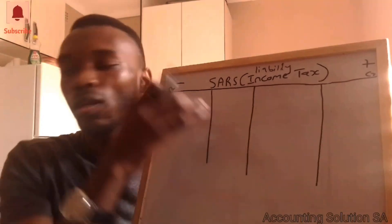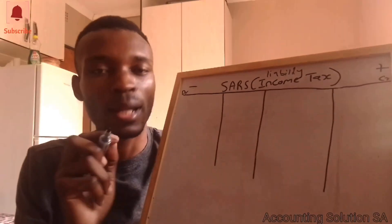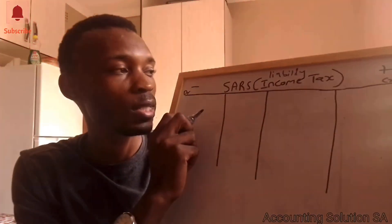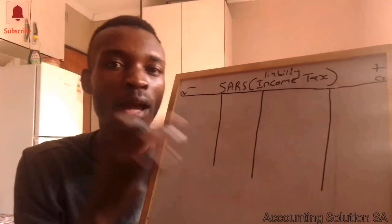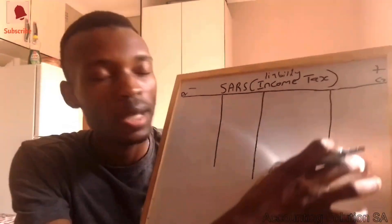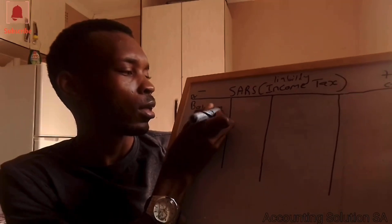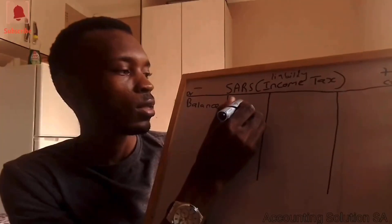Going back to the question: they said the debit balance of SARS income tax on 1 July 2017 is 10,800. Since it's stated as a debit balance, we write it on the debit side. If they had said it was a credit balance, we would write it on the credit side. So we start with a balance of 10,800 on the debit side.